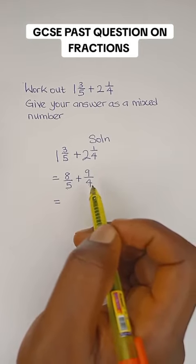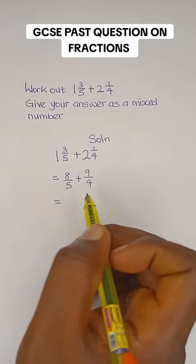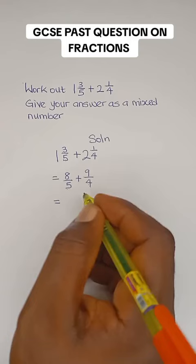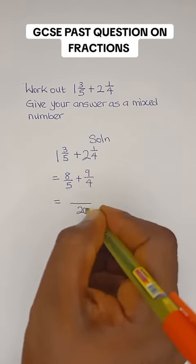You can find the LCM of the two denominators, but since the two denominators are less than 10, all you need to do is multiply them. So 5 multiplied by 4 is 20.